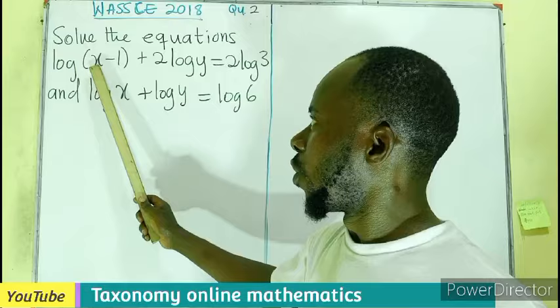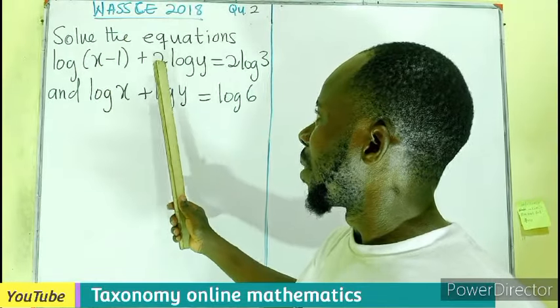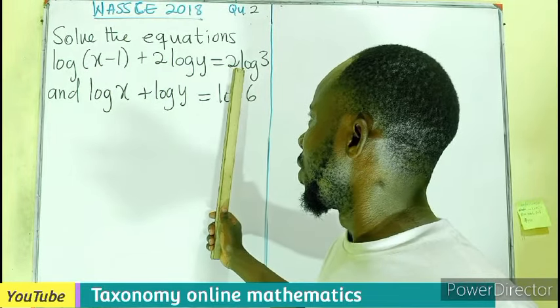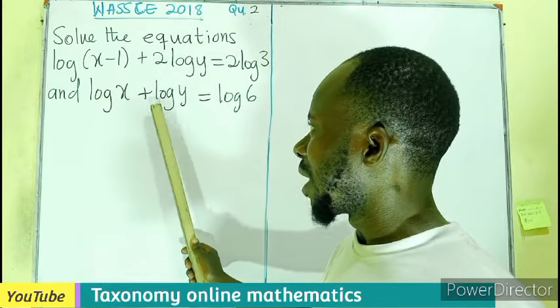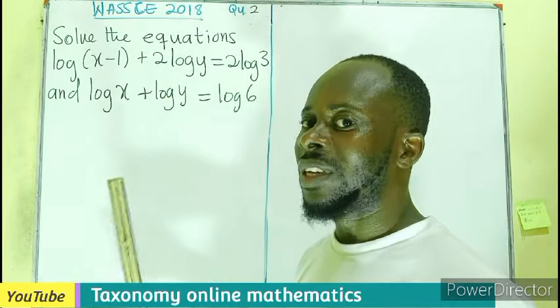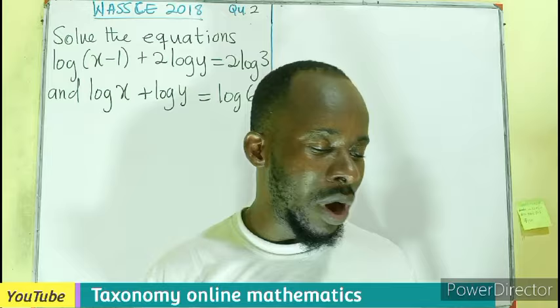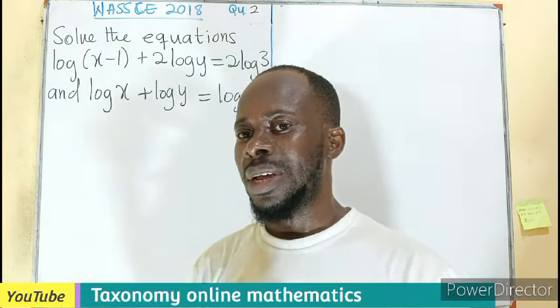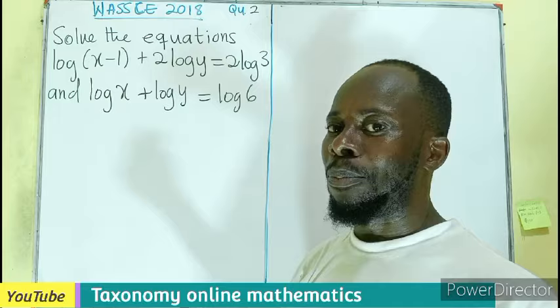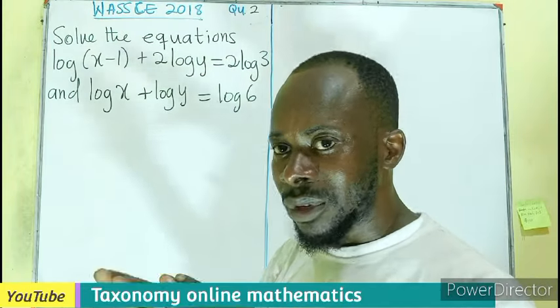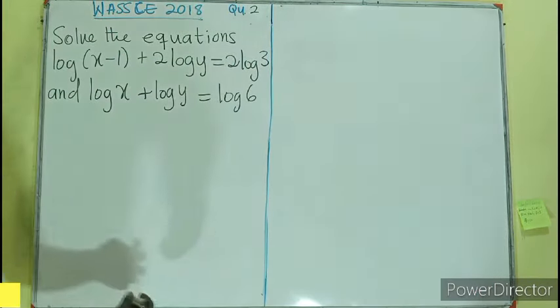Solve the equations log(x-1) + 2log y = 2log 3 and log x + log y = log 6. Don't forget if a logarithm is written without the base, it is in base 10. So let's write them and apply the laws of logarithms to solve for x and y.